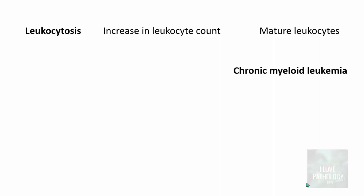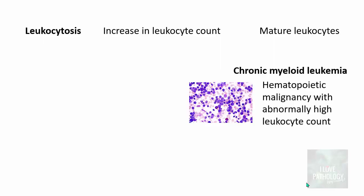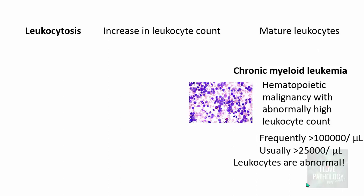Now let us understand chronic myelogenous or chronic myeloid leukemia. This is a hematopoietic malignancy with abnormally high leukocyte count, frequently more than 1 lakh cells per microliter, usually more than 25,000 per microliter. But importantly, in chronic myelogenous leukemia, though the leukocyte count is high, these leukocytes are abnormal — basically immature leukocytes.